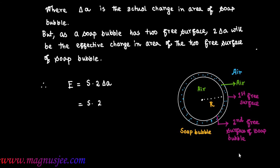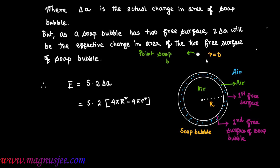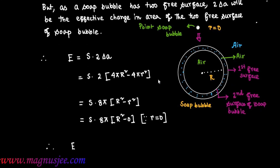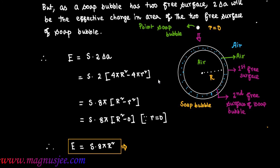Therefore, E equals S dot 2 delta A equals S dot 2 times (4πR² minus 4πr²). Assuming the soap bubble is blown from a point soap bubble of radius r equals 0, this gives S dot 8π(R² minus 0). Therefore, E equals S dot 8πR². This is the surface energy of a soap bubble of radius capital R.